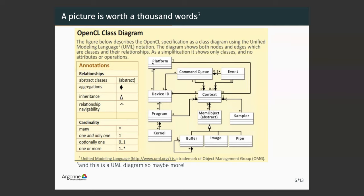After choosing a device, you will create your kernel, build it into a program, and submit it into a command queue — it's like a CUDA stream if you come from CUDA. This command queue is bound to a device and bound to a kernel. The key concepts are: device, platform, command queue, kernels. If you want to synchronize between kernels or profile kernels, you can use events: put events in the command queue and it can tell you when a kernel starts and ends.